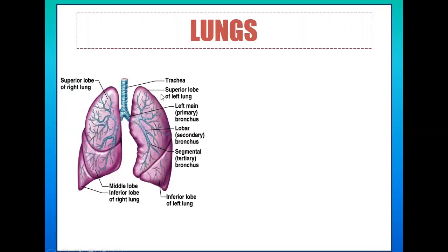The superior part of the lungs is called the apex, and the inferior part is called the base. The base of the lungs rests on a muscle known as the diaphragm.